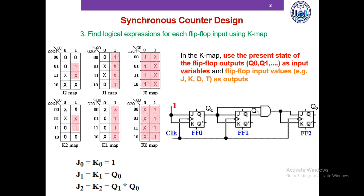For a D flip-flop you will only have 3 K-maps: one for D2, one for D1, and one for D0. For a T flip-flop you will also have only 3 K-maps: one for T2, one for T1, and one for T0.